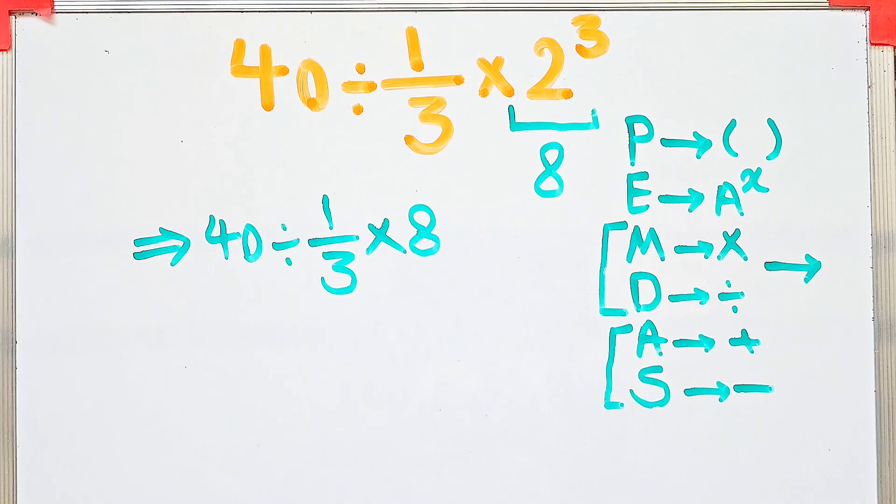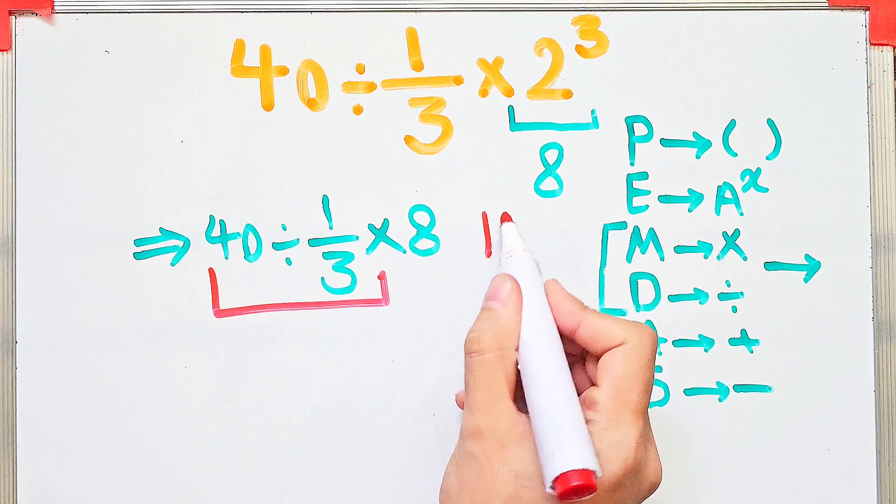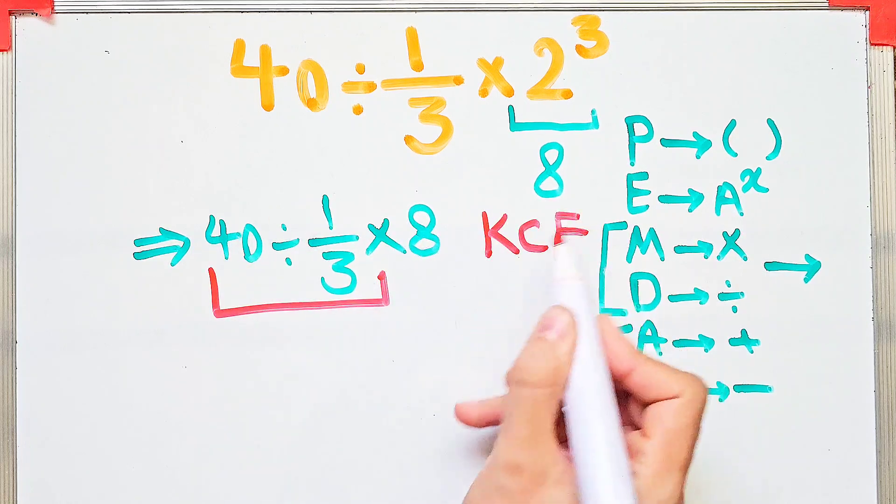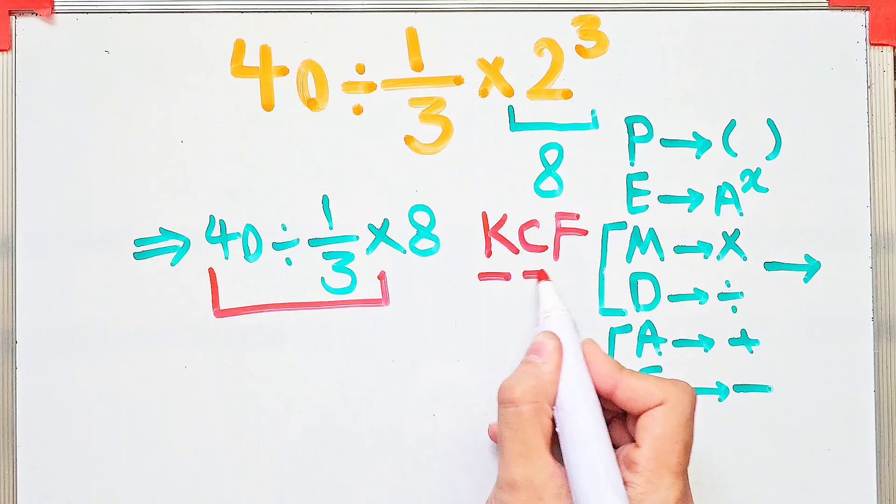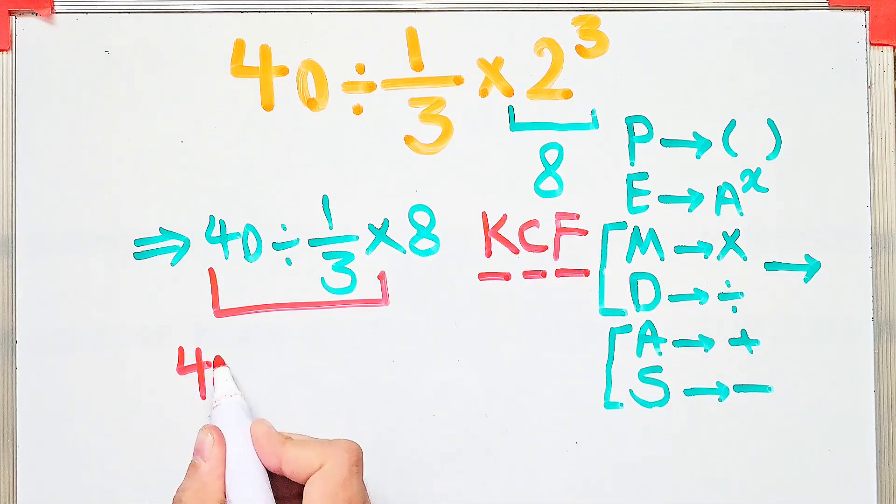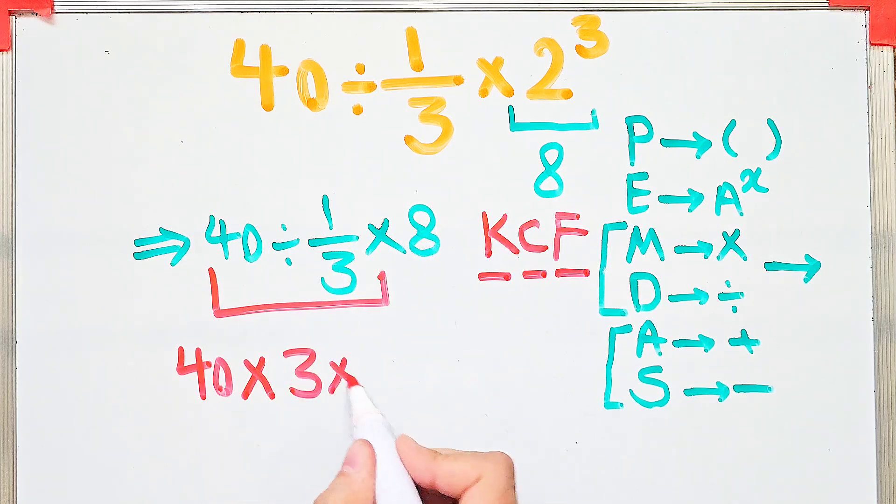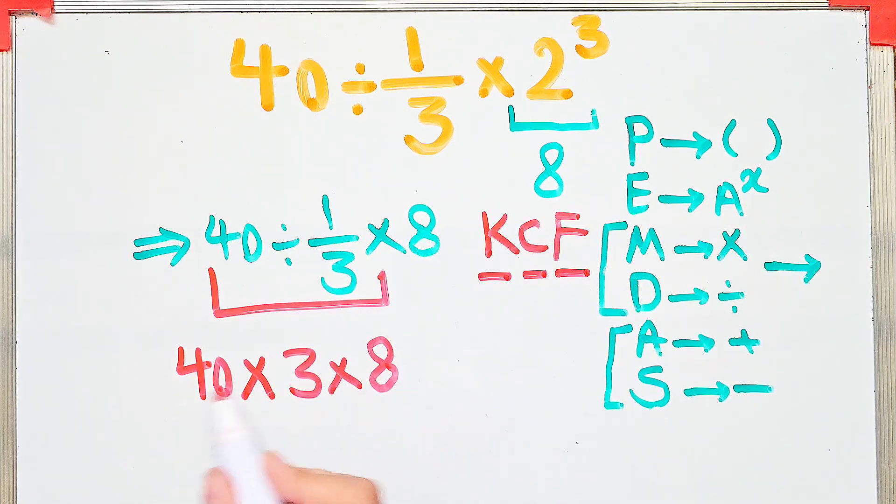To solve the first part we use the KCF rule. KCF means keep the first number as it is, then change the sign, then flip the second fraction. We keep the first number as it is, then we change the sign, then we flip the second fraction. Now we have a new expression and we start from the left and simplify.